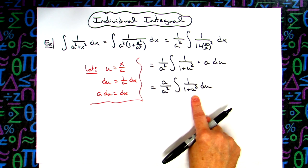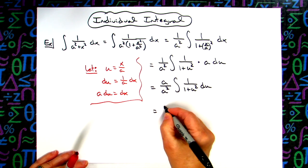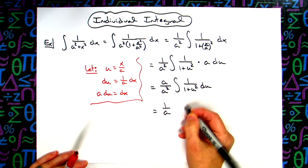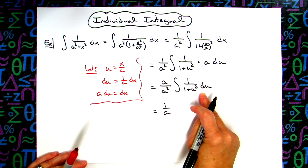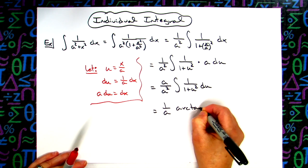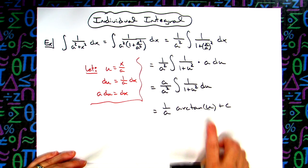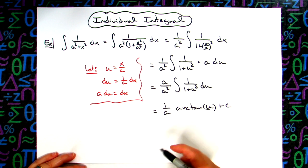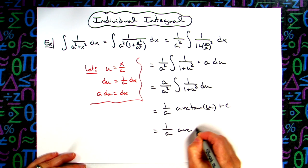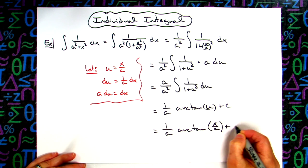We're now to the place where we can integrate this. We can go ahead and reduce this to lowest terms. So we'll have 1 over a out here in front. Integrating this, we should know this is inverse tangent. So arctan of u plus c. Go ahead and put parentheses around that. And then replace u with what it equals. So we'll have 1 over a inverse tangent of x over a plus c.